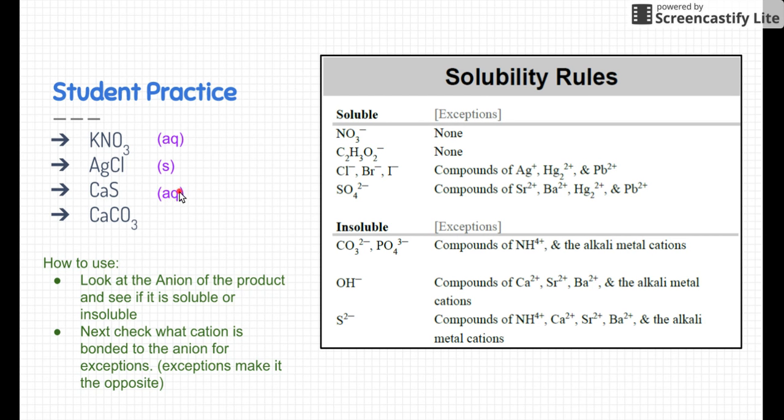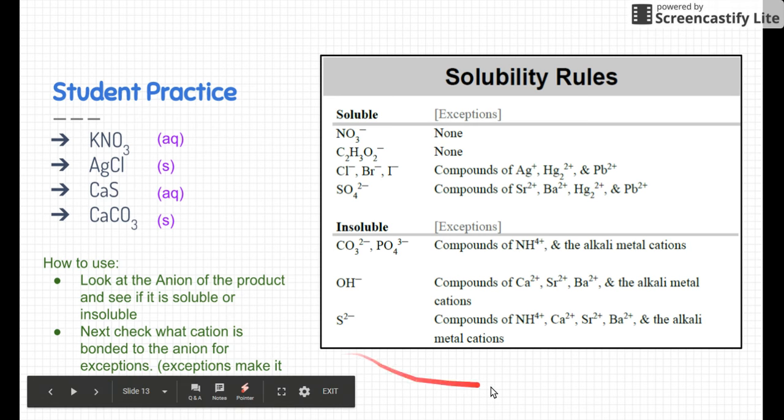Last one: calcium carbonate. Again, let's look at carbonate. Carbonate is right here—it says it is insoluble, so we can write an s. And let's just double check: I see over here that calcium is not an exception. Calcium is not an alkali metal, it's an alkaline earth metal, so we're safe. But if it was sodium or potassium or lithium or any of the other alkali metals, then I might have to flip that. But that's basically it. I hope you guys understand that and you're able to do it. Good luck.